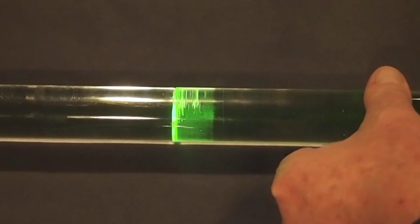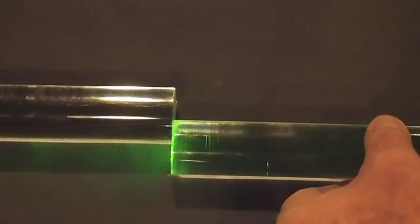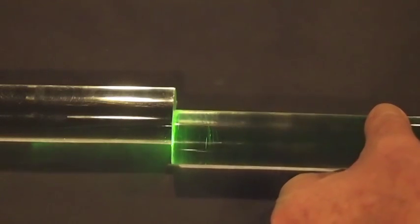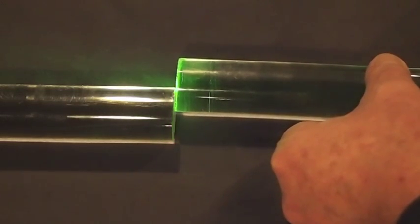We can also offset the cores of the fiber, and you can see on the background the light that's not coupled through the joint due to the misalignment of the two cores.